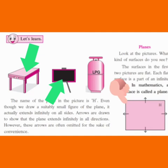The name of the plane in the picture is H. Even though we draw a suitably small figure of the plane, it actually extends infinitely on all sides. Arrows are drawn to show that the planes extend infinitely in all directions.